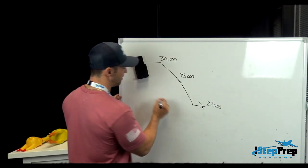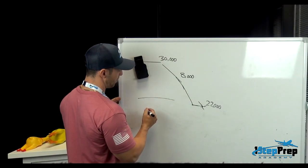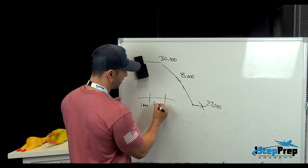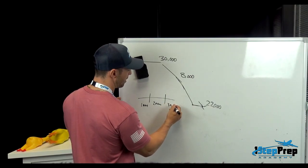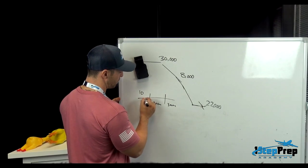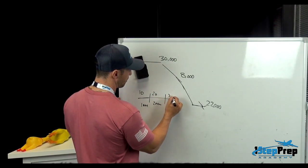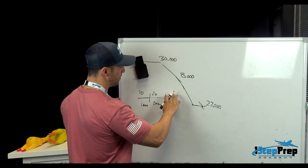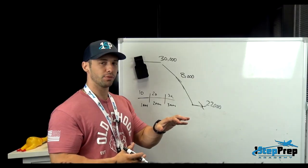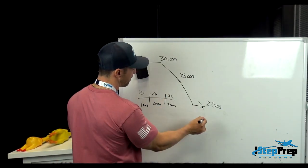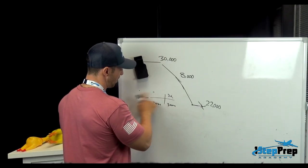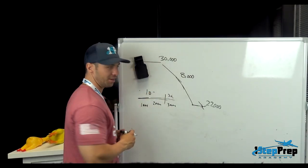A rule of thumb in jets: assuming you're in level flight, for every one nautical mile traveled you can slow 10 knots — so one mile gives you 10 knots, two miles gives you 20, three miles gives you 30. For every mile traveled in level flight, you can reduce speed by about 10 knots. If we're on a descending path, you effectively need to double this — so rather than every one mile slowing 10 knots, every two miles you slow 10 knots.